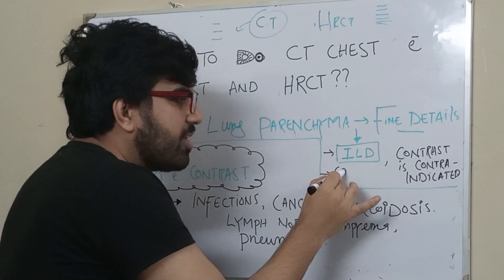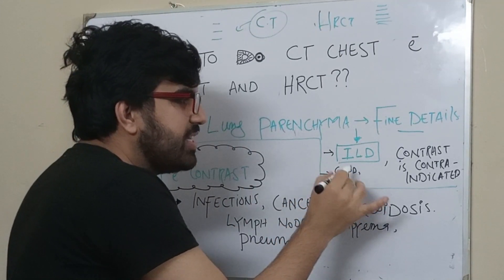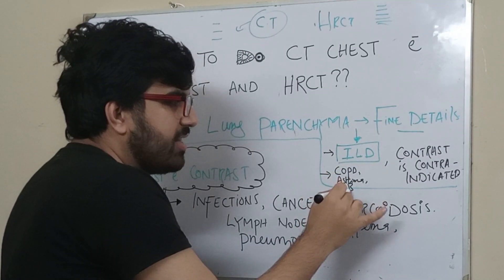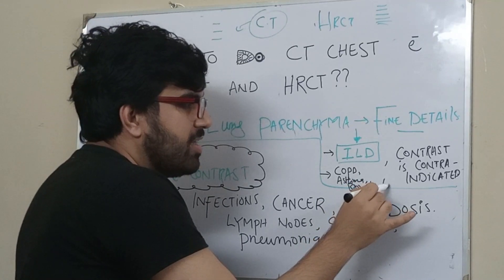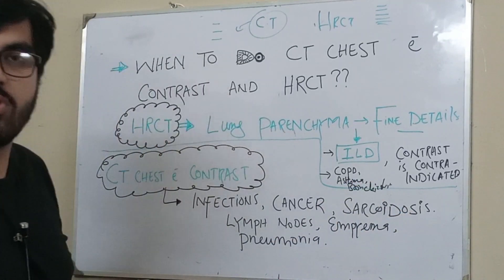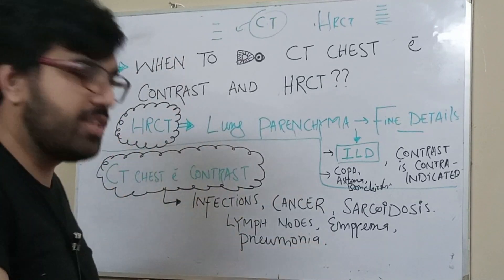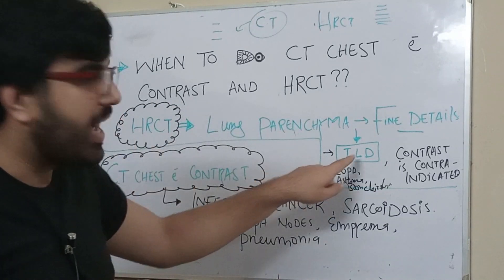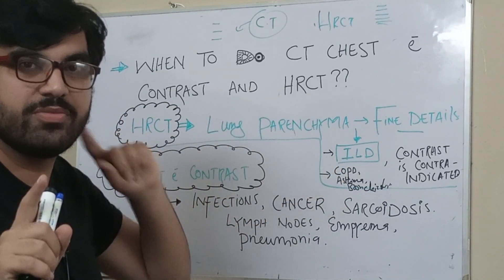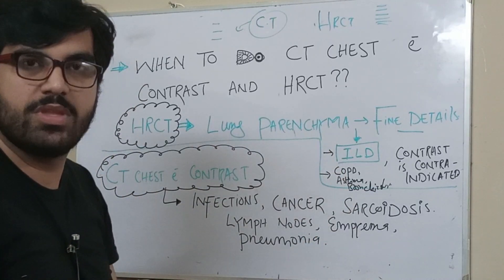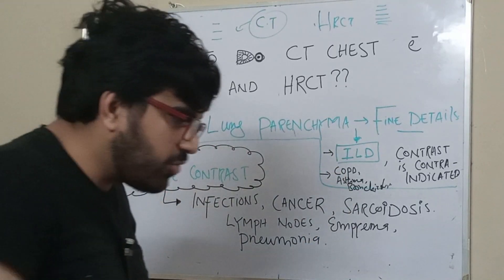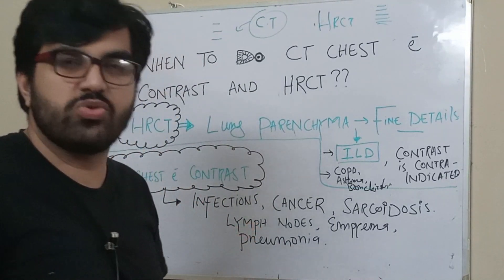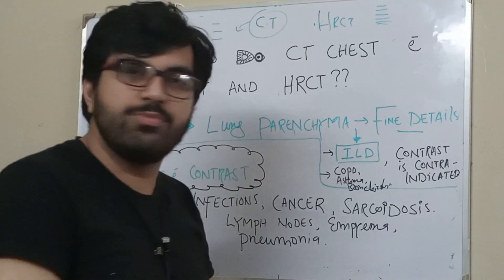HRCT is indicated for interstitial lung diseases (ILD) and obstructive lung diseases such as COPD, asthma, and bronchiectasis — all conditions where you want to look at the parenchyma. The ILD list includes IPF, sarcoidosis, hypersensitivity pneumonitis, asbestosis, berylliosis, silicosis, and coal worker's pneumoconiosis.